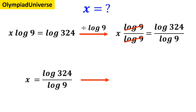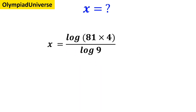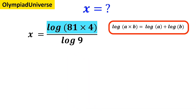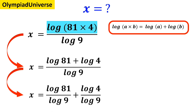We write this expression as x equals log of 81 times 4 over log of 9. Based on the logarithm rules, log of a times b is equal to log of a plus log of b. So we rewrite the expression highlighted in blue as follows: x equals log of 81 plus log of 4 over log of 9, and this equation simplifies to x equals log of 81 over log of 9 plus log of 4 over log of 9.